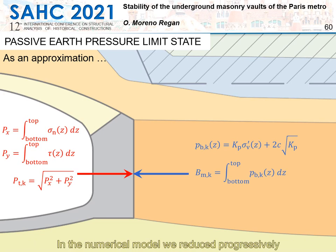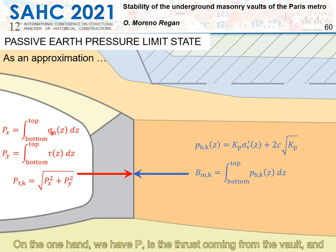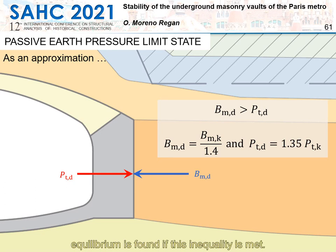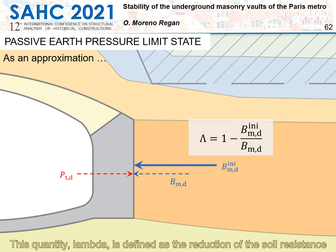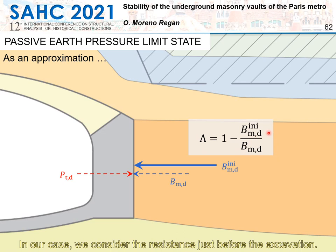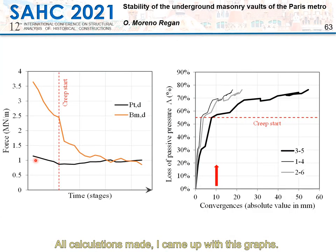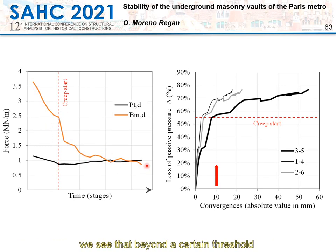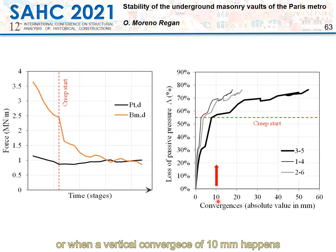In the numerical model we progressively reduce the shear and elastic properties of the soil. We compare two quantities: P, the thrust coming from the vault, and the resistance of the soil according to the standard approach at the limit state. Equilibrium is found when the inequality is satisfied. The quantity λ is defined as the reduction of soil resistance with respect to a reference initial value — just before excavation. Results show the thrust P generated by the vault remains almost constant at 1 MN/m. Beyond a certain threshold, deformations increase rapidly. A critical threshold is found at a loss of 55% of soil resistance, or when a vertical convergence of 10 millimeters occurs.